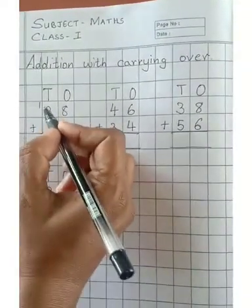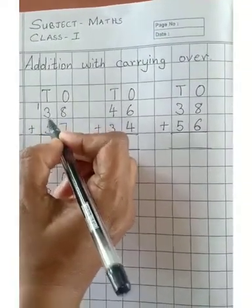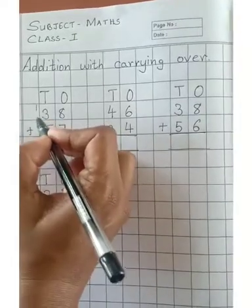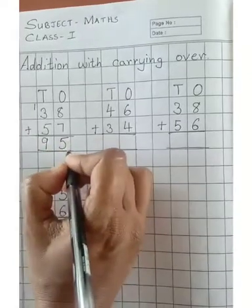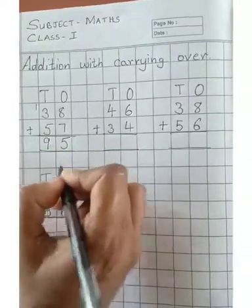So 5 plus 3 gives you 8, 8 plus 1 gives you 9. So 9 tens plus 5 ones gives you 95.